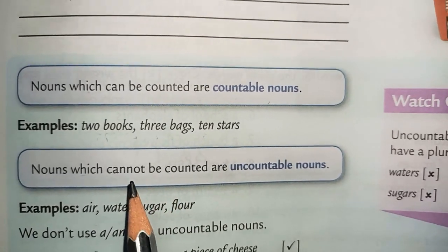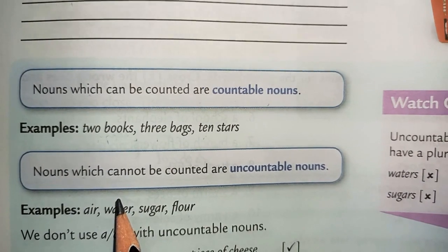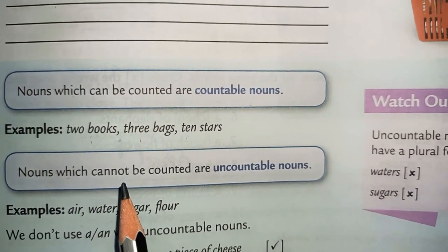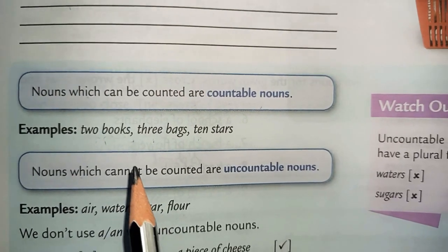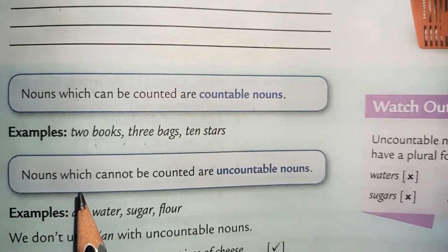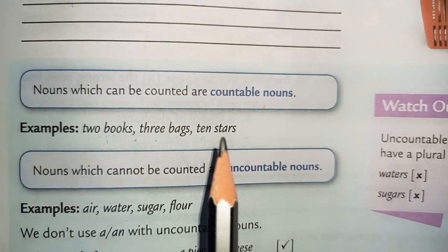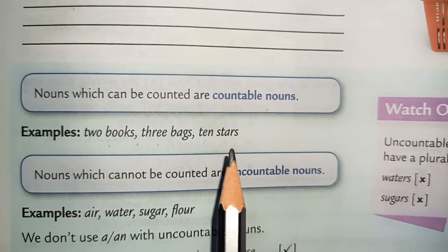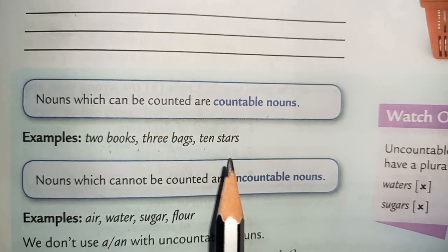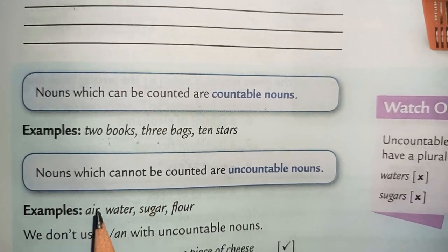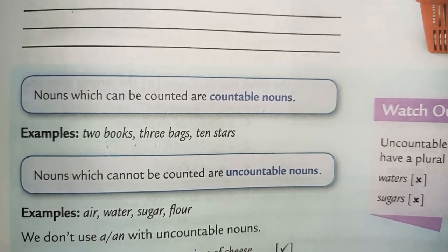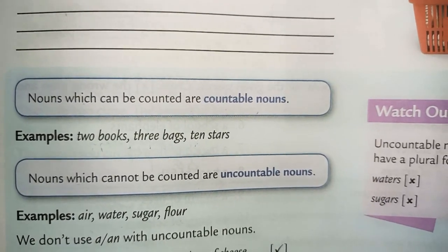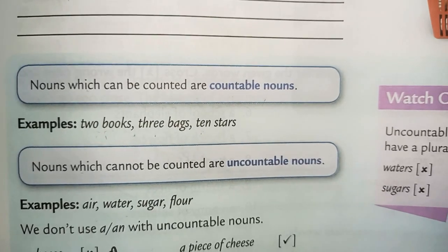Water — can we count water? No. Sugar — obviously no, we cannot count it. Salt — so many things are there that we cannot count. For example, if I ask you to count the stars present in the galaxy, you cannot count them exactly because there are millions, trillions of them. We cannot give a specific amount of how many stars there are.